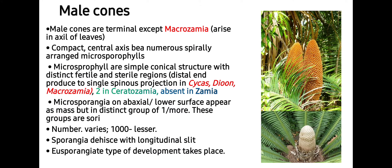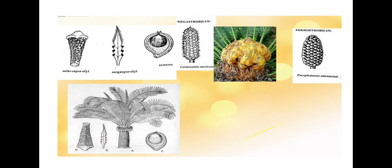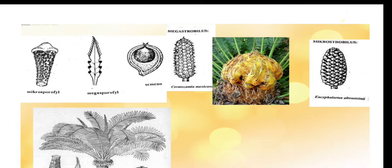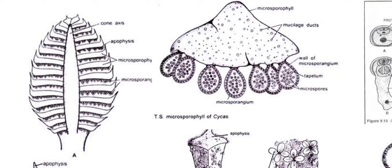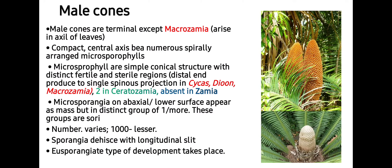Next is the male cone. Male cones are terminal except in Macrozamia, where they arise in the axil of the leaf. They are compact, bearing a central axis with numerous spirally arranged microsporophylls. Microsporophylls are simple conical structures with distinct fertile and sterile regions. The distal end produces a single spinous projection in Cycas, Dioon, and Macrozamia; two projections in Ceratozamia; and projections are absent in Zamia.